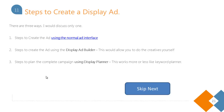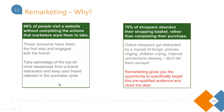That was one method. You can also use the Display Ad Builder to create ads, or use the Display Planner, which is more or less like the Keyword Planner. It allows you to select different kinds of targeting options right there. You can check it out — it's pretty simple to use.